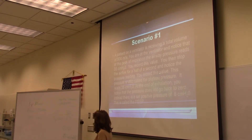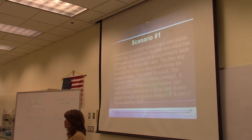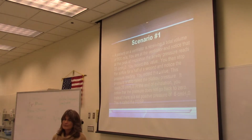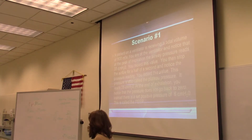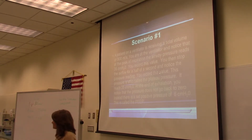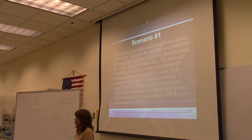So we just calculated dynamic compliance. The units are cc's per centimeter of water. The normal value for dynamic compliance is 30 to 40 cc's per centimeter of water. This patient has low compliance — either due to airway resistance or stiffness — one of the two.